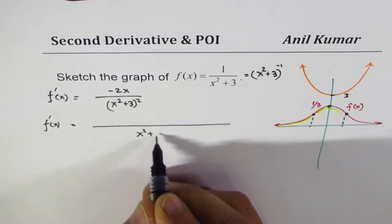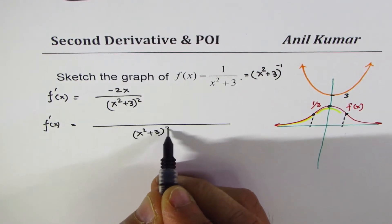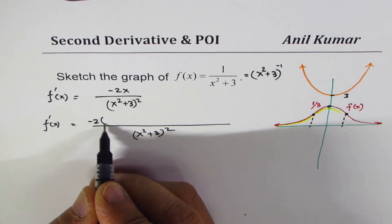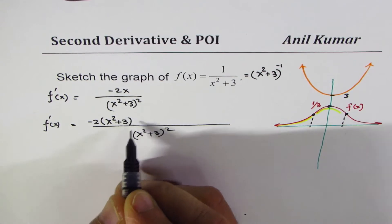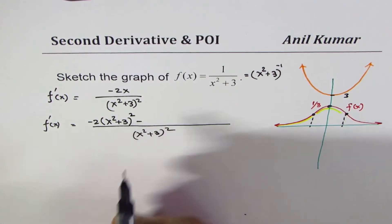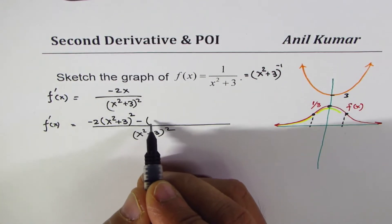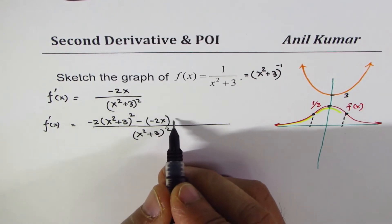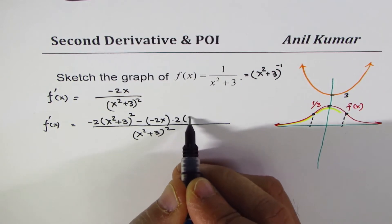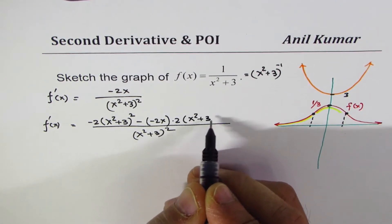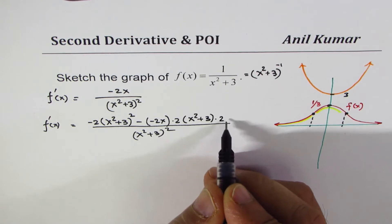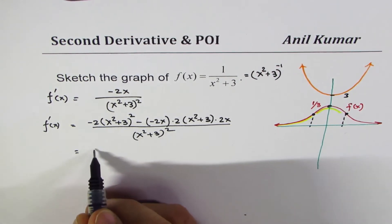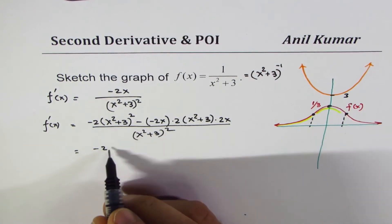For the second derivative, we use the quotient rule. The denominator squared is (x² + 3)⁴. The numerator is: the derivative of −2x times (x² + 3)², which is −2(x² + 3)², minus (−2x) times the derivative of (x² + 3)², which is 2(x² + 3)·2x.